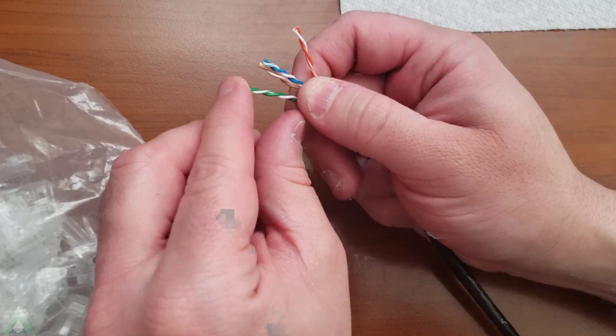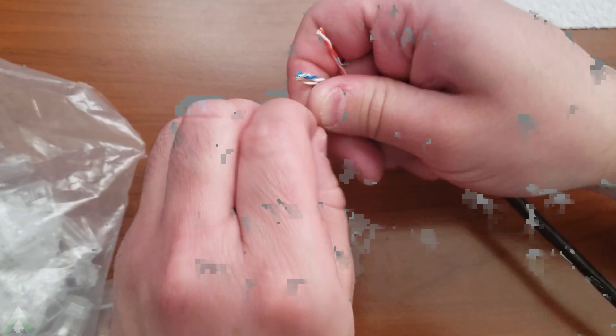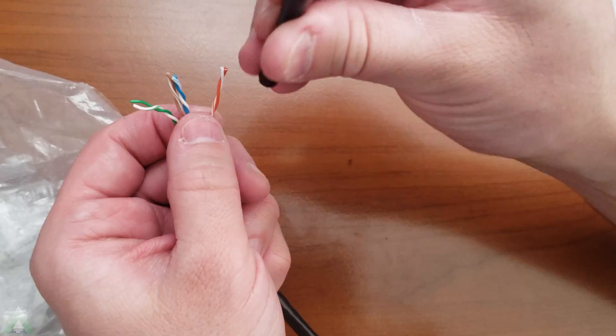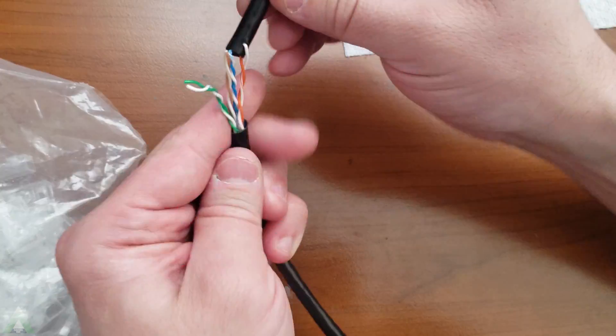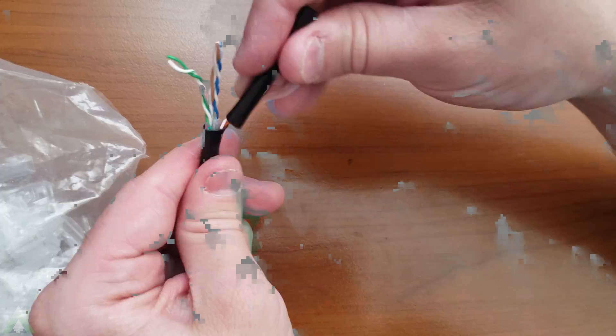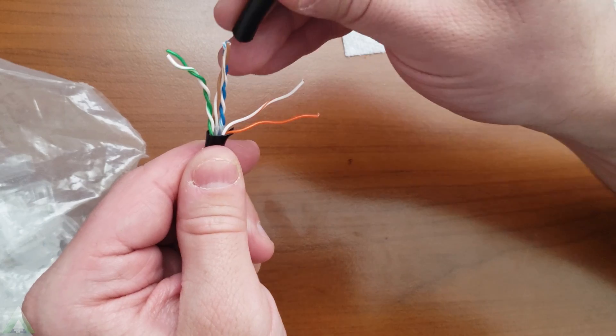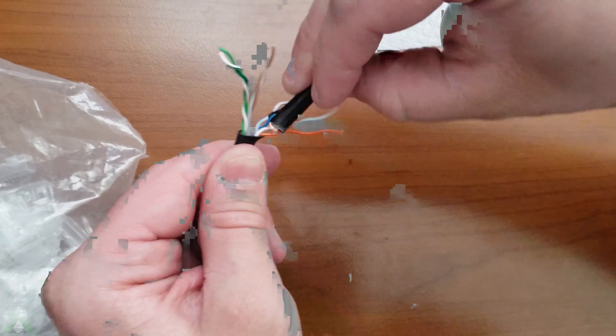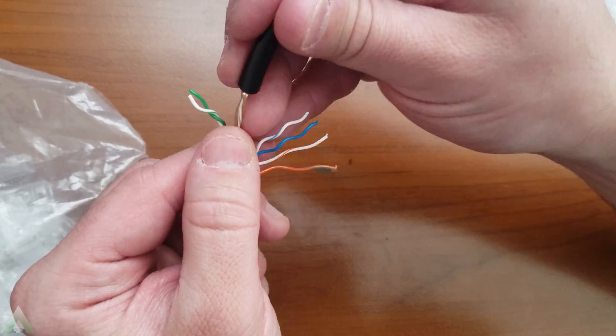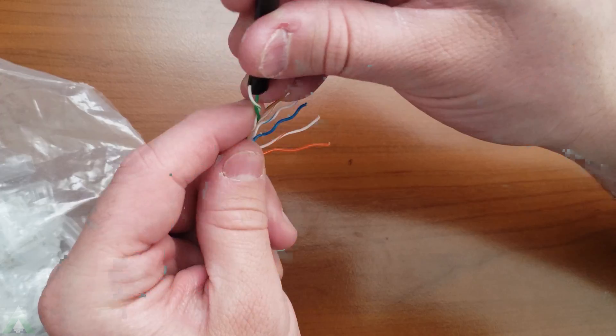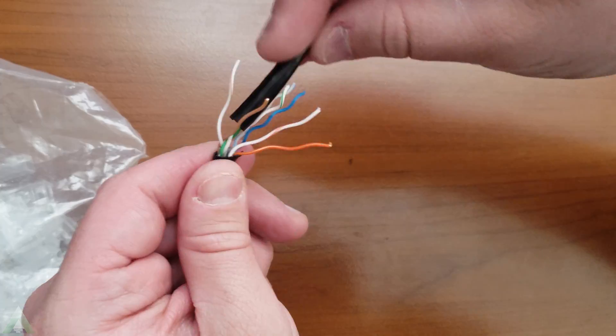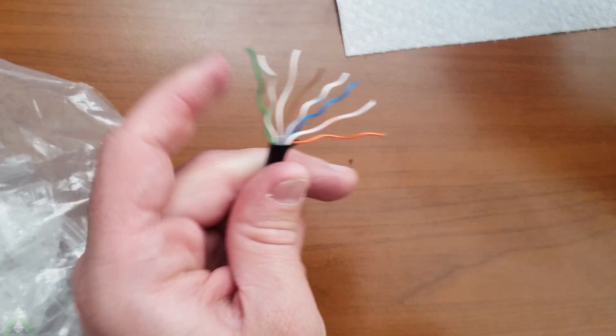Now we can untwist them. There are a couple ways to do it. You can do it using your fingers and start untwisting them that way. The other way is if you saved a little bit of the jacket when you removed it, you can use that to assist you. This makes it go quicker without having to untwist them manually.